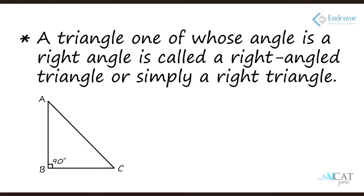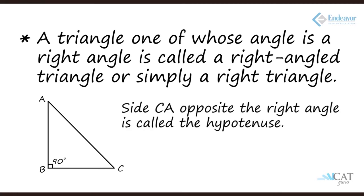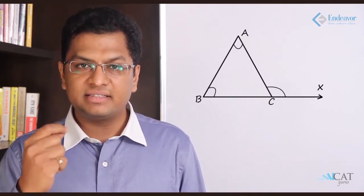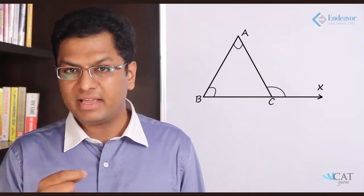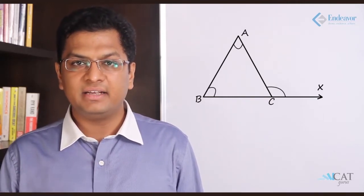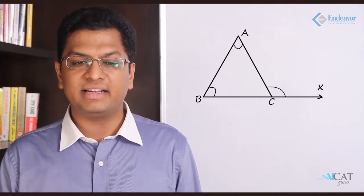Let us look at the third type of triangle. If one of the angles is 90 degrees then it is called a right angle triangle. In a right angle triangle, the side opposite to the 90 degree angle is called the hypotenuse. Now, in a triangle, what is an external angle? If ABC is a triangle and at vertex C we have an extended line, the other angle which is formed on that extended line is called an external angle.